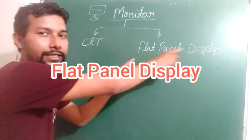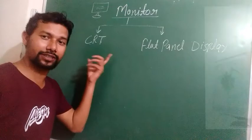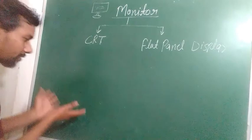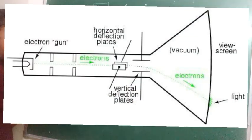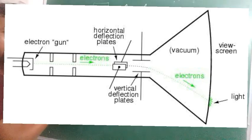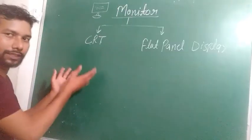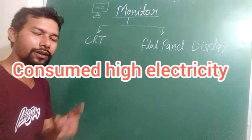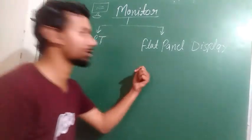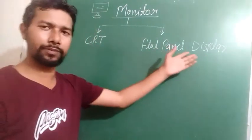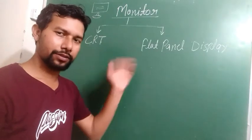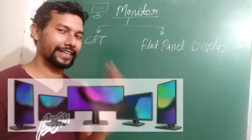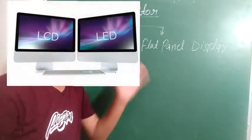CRT monitors are based on cathode ray tube mechanism. A cathode gun fires electrons onto a screen coated with phosphorus; when electrons strike the screen, it blinks, and this process happens very fast so you can see pictures. CRT monitors are old; they consume large electricity, take large space, and are very heavy. Because of these problems, we moved to flat panel displays. Flat panel displays use liquid phosphorus, making them very light, movable, and attractive. LED and LCD are examples of flat panel displays.